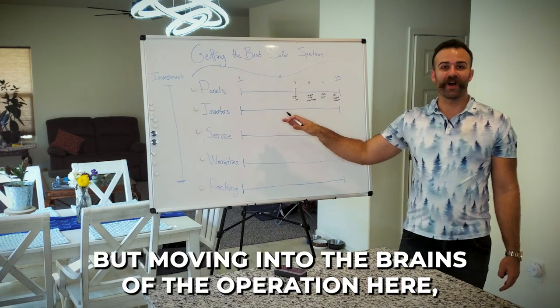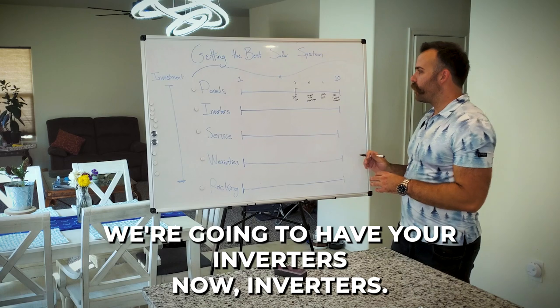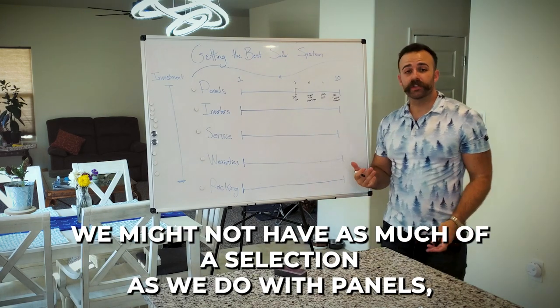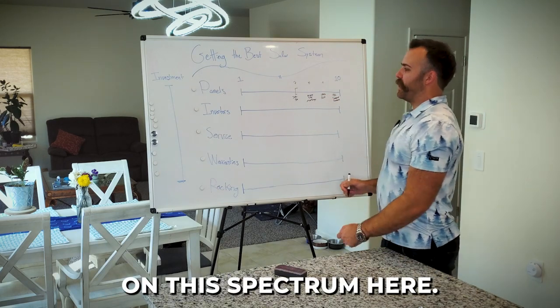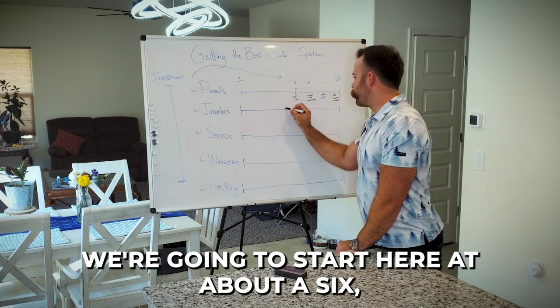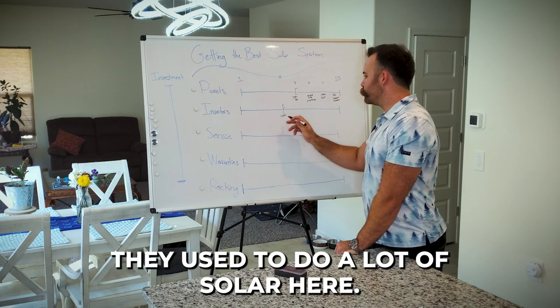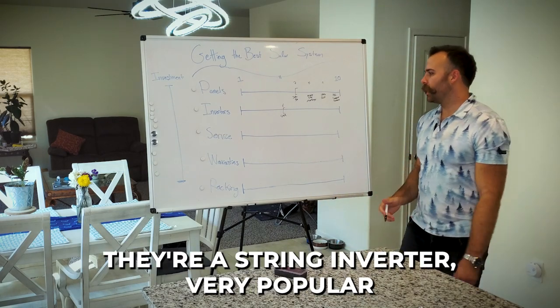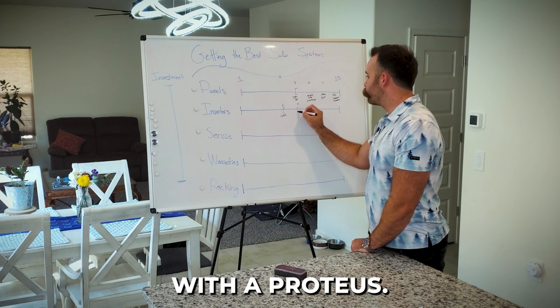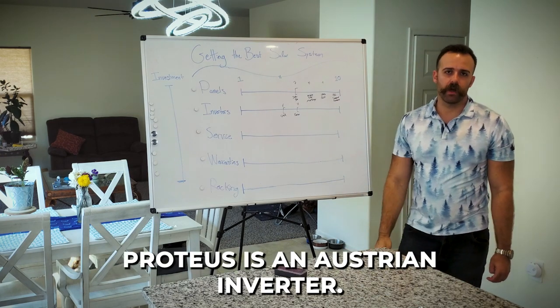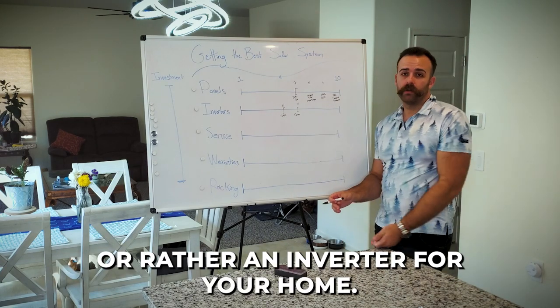But moving into the brains of the operation here, we're going to have your inverters. Now, inverters, we might not have as much of a selection as we do with panels, but there's a couple of names that I'm going to throw out. On this spectrum here, we're going to start here at about a six, and I'm going to go ahead and put SMA. They used to do a lot of solar here. They're a string inverter, very popular historically. We move into kind of your seven here with a Fronius. Fronius is an Austrian inverter, good reputation, certainly a good inverter for your home. We don't see it too much in the United States.